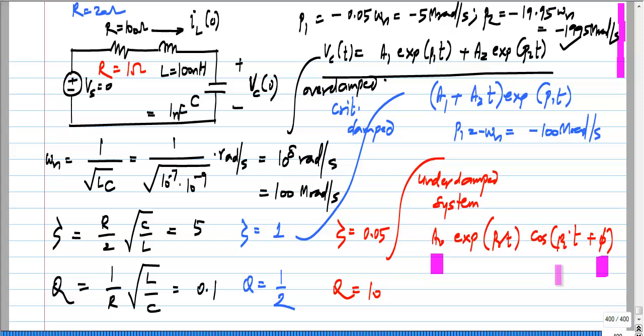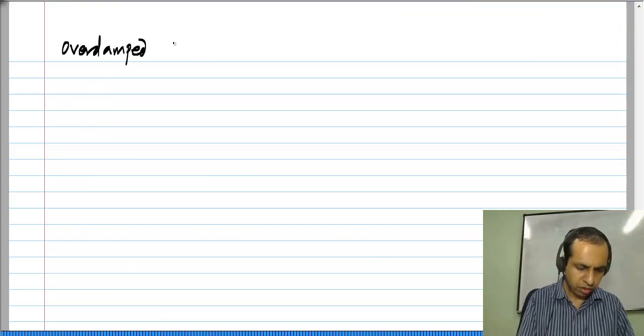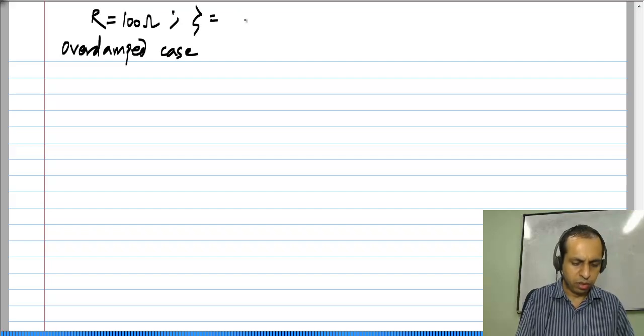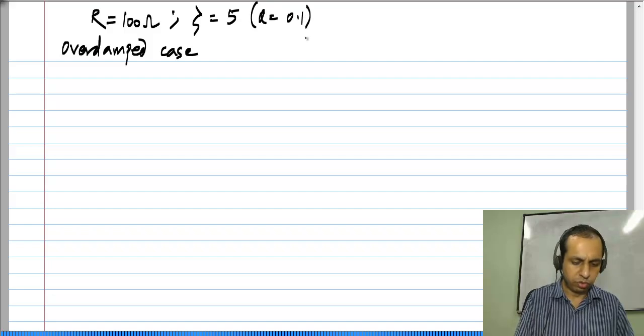I will show one particular example, and you can do it for the other cases. I will do it for the overdamped case. The overdamped case I took, which corresponded to R equals 100 ohms, or zeta equals 5 and Q equals 0.1.